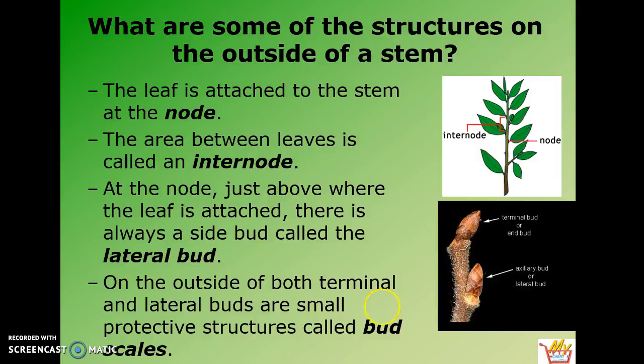Hopefully you were able to see a node, and the area between leaves is called an internode. Just above the node is called a side bud or a lateral bud, and then on the outside of both side and lateral buds are bud scales. Hopefully you were able to see that.